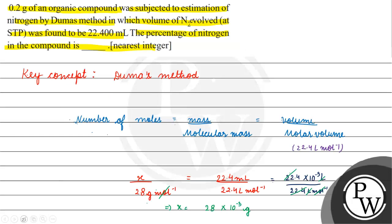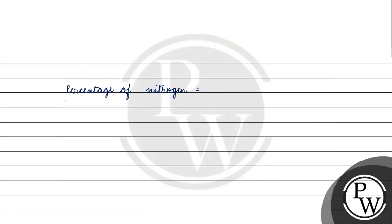Now we need to find the percentage of nitrogen. Percentage of nitrogen equals mass of nitrogen, which we get as 28 × 10⁻³ grams, by mass of organic compound, that is 0.2 grams, into 100.